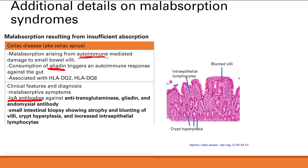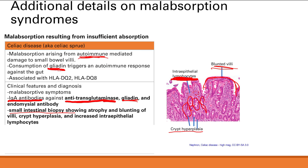The key biopsy findings on small intestinal biopsy are three features: blunted villi, which appear very flat; intraepithelial lymphocytes, reflecting the autoimmune inflammatory reaction — seen as many blue dots on the slide; and crypt hyperplasia, with enlarged crypts. Be able to identify these three biopsy features as characteristic of celiac disease. The antibodies are anti-transglutaminase, anti-gliadin, and anti-endomysial.